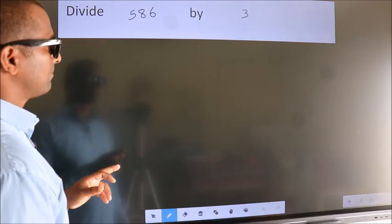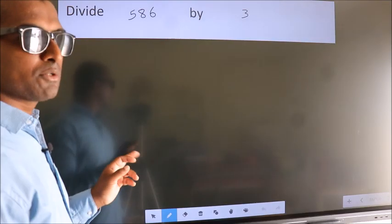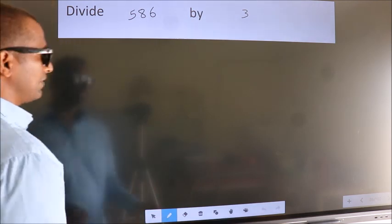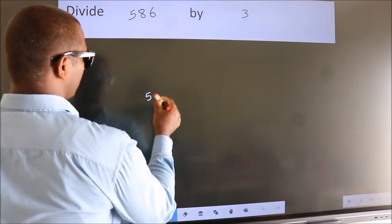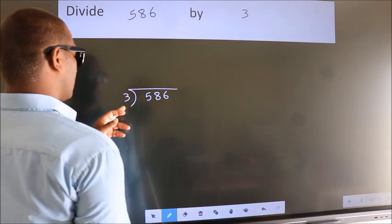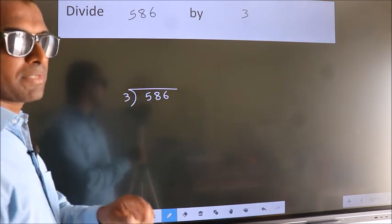Divide 586 by 3. To do this division, we should frame it in this way. 586 here, 3 here. This is your step 1.